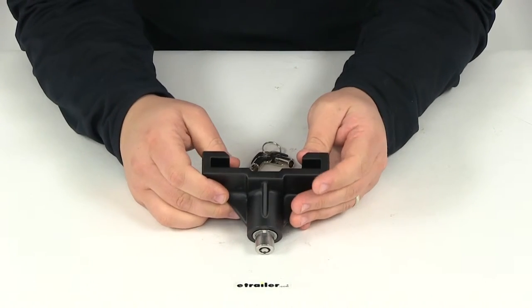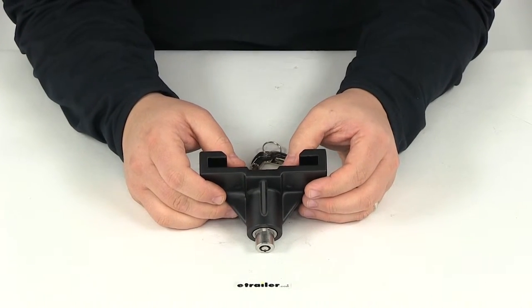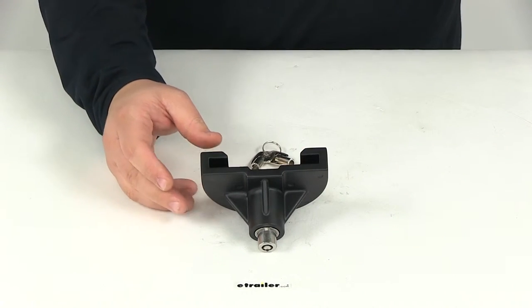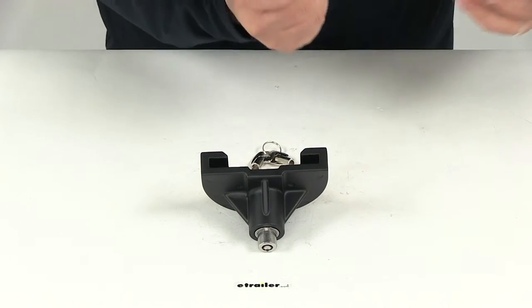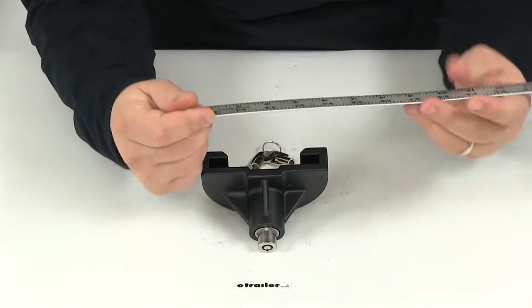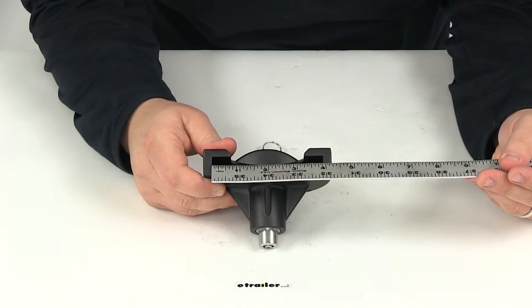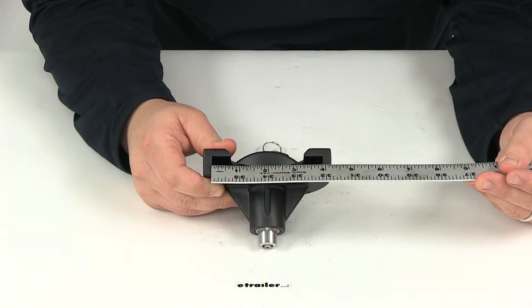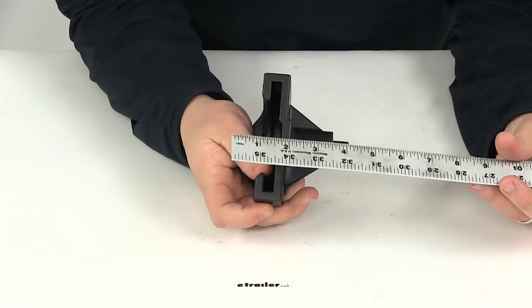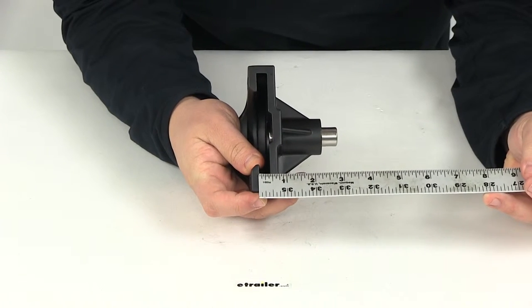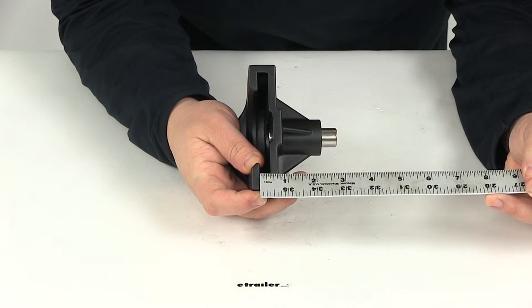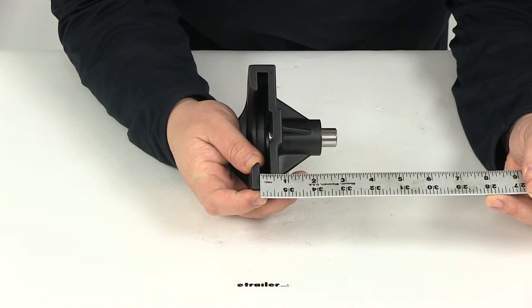A few measurements to go over real quick to see if this is going to fit your coupler. The coupler width including the lip must not exceed the inside measurement here, which is 3 and 13/16 of an inch. It also cannot exceed the height that this portion gives us right here of the lip, which is 5/16 of an inch.